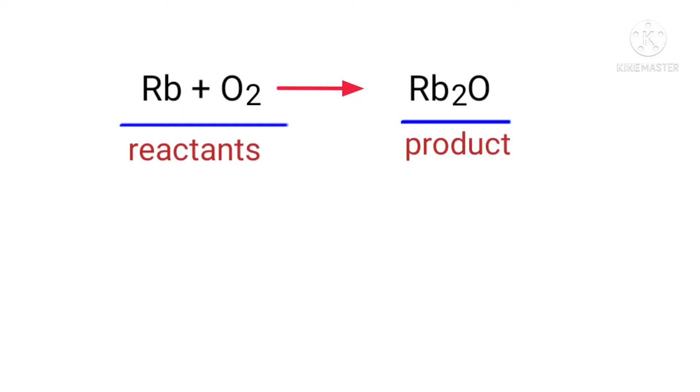In this equation the reactants are Rubidium and Oxygen and the product is Rubidium oxide. If you look at this equation, the equation is not balanced.